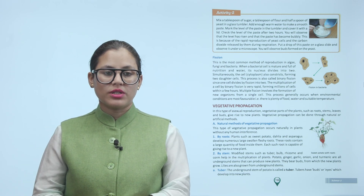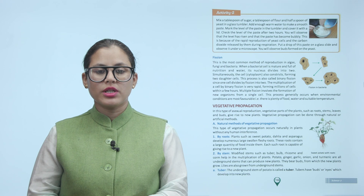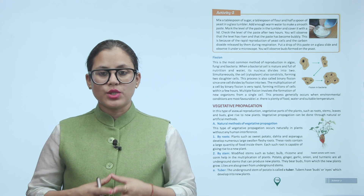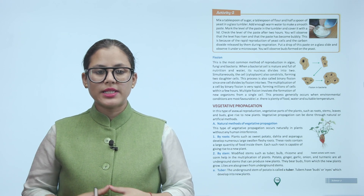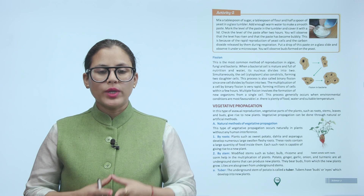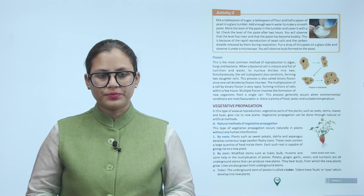Vegetative propagation: In this type of asexual reproduction, vegetative parts of plants such as roots, stems, leaves, and buds give rise to new plants. Vegetative propagation can be done through natural or artificial methods.